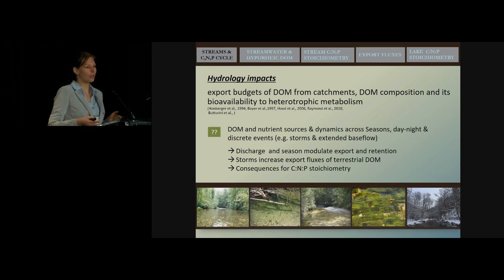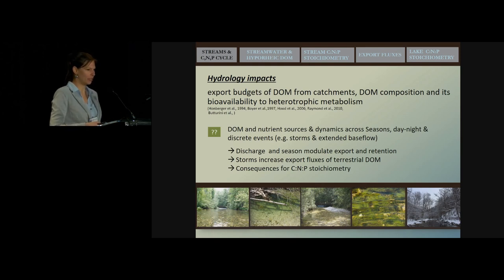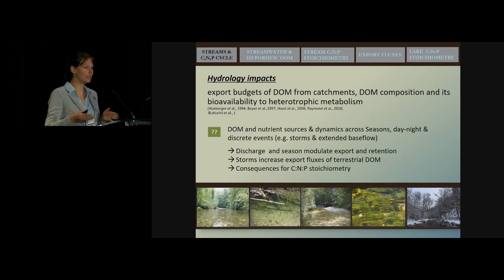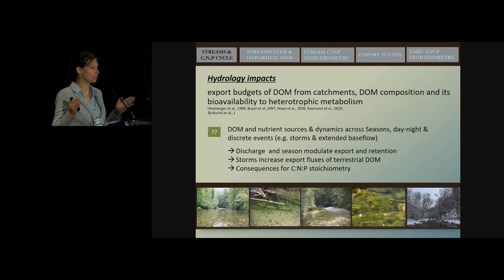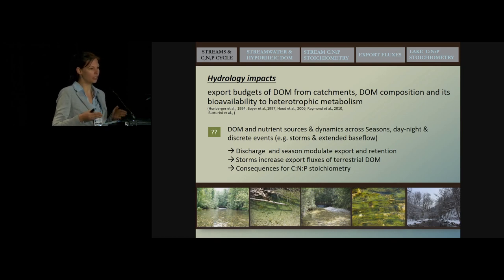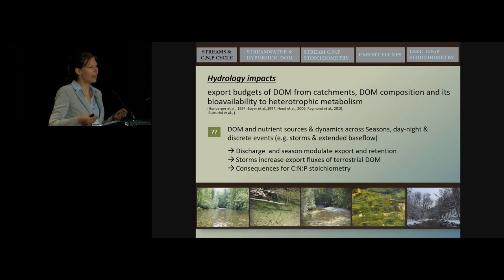We know that hydrology actually impacts export fluxes from catchments, the composition of dissolved organic matter, and therefore also the bioavailability to heterotrophic metabolism. We were asking the question to understand the sources of dissolved organic matter and nutrients — how they change in varying seasons, what are the dynamics across day and night, events like storms or extended base flow periods — all things that could come with global climatic changes. We were wondering how discharge and season modulate export and retention in streams and lakes, how storms affect export fluxes and dissolved organic matter quality transported downstream, and what are the consequences for carbon to nutrient to phosphorus stoichiometry.